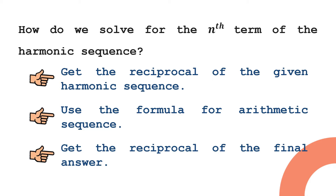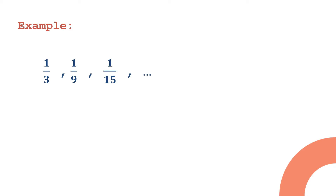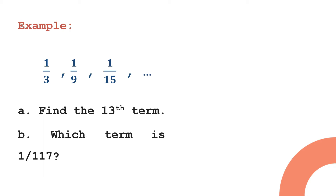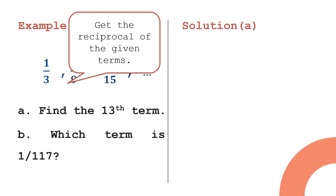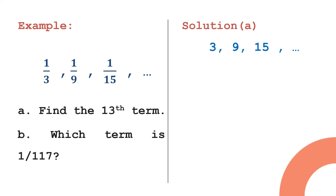Let's have an example. Given the harmonic sequence 1/3, 1/9, 1/15, and so on, our tasks are: first, find the 13th term; and second, find which term is 1/117. The first step is to get the reciprocal of the given terms. Flipping each term gives us the arithmetic sequence 3, 9, 15, and so on. Now let's identify the given values.